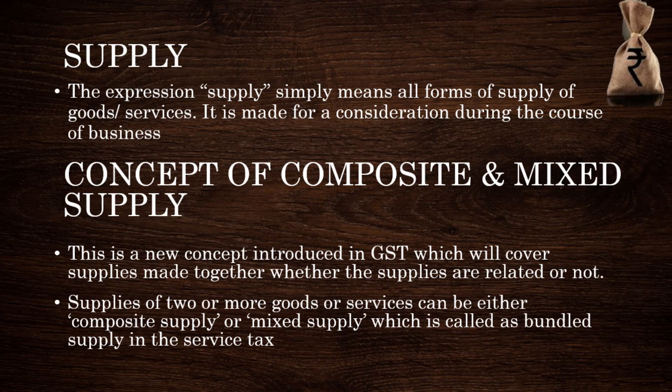First, let's look at Supply. If you look at Supply, there is a product or transaction happening — a financial transaction in the normal course of business. Let's look at the consideration — a money or amount involved. The amount is not just cash, but can include exchange or barter system. So let's look at the Supply definition.